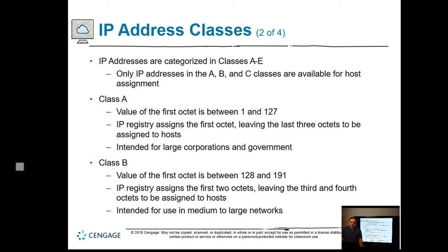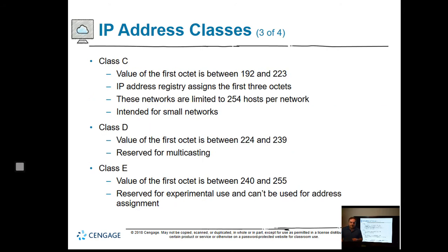The IP registry assigns the first octet for Class A, leaving the last three octets for hosts. A host is any device — a computer, a phone, a router, a switch, or a server. They all have to communicate on the same network if they're going to be in the same internal network. Class B starts at 128 and ends at 191. Class C has a first octet starting at 192 and stopping at 223. As you go from Class A to Class C, you have fewer hosts but more networks — Class A has very few networks but many hosts, Class B is in the middle, and Class C has many networks but very few hosts.